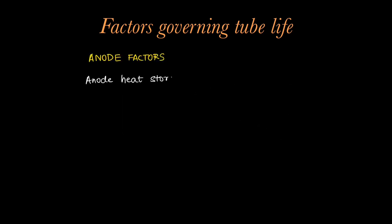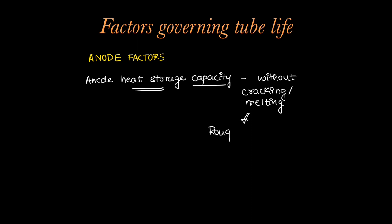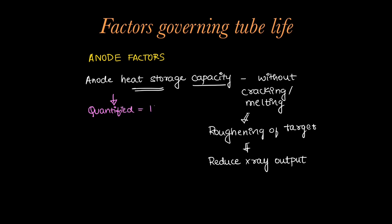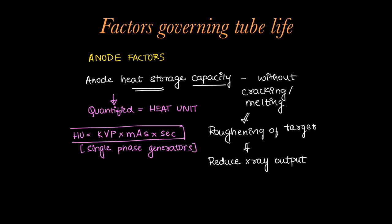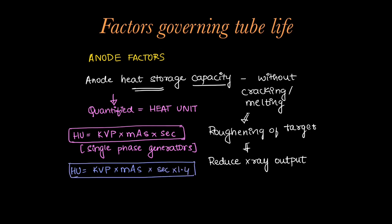Coming to anode factors, each anode has an anode heat storage capacity which is a standard for itself — it is how much heat it is able to bear without cracking or melting. Cracking or melting will cause roughening of the target surface which reduces x-ray output. This heat storage capacity can be quantified in heat units. The heat unit is KVP multiplied by MAS multiplied by seconds for single phase generators. For a three phase generator, the formula is KVP × MAS × seconds × 1.4. Nowadays we use three phase generators, so we use this formula.